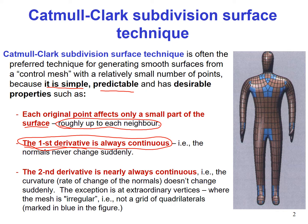The last desirable property is that the second derivative is nearly always continuous. The second derivative is basically curvature — the rate of change of normals — and that doesn't change suddenly. The exception is at extraordinary vertices where the mesh is irregular and does not form a grid of quadrilaterals. Such vertices are marked in blue in this mesh.